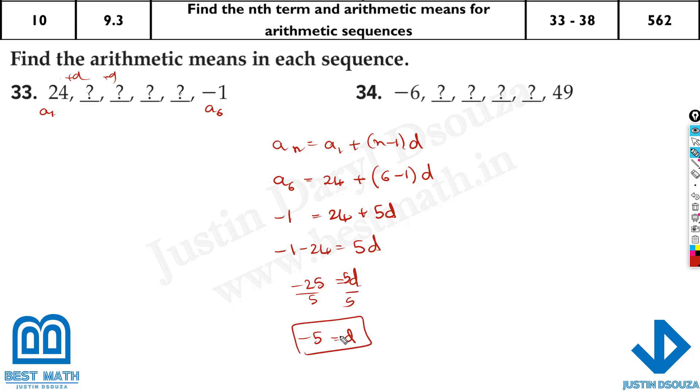So I know minus 5 is the d value. Or you can just put this entire thing in the calculator. We know a_6 is minus 1, right? Put this in the calculator. You get the d value directly. And now keep on adding minus 5 here. 24 minus 5 is 19. Then we get 14, we get 9, we get 4, then we get minus 1. So this is how we can easily find it out.